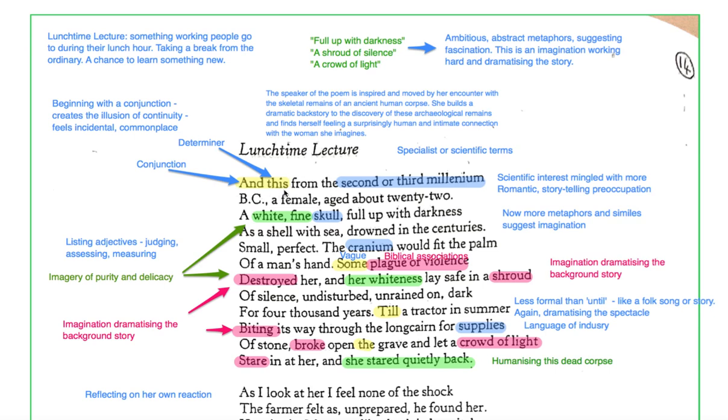Now, this is a determiner. Words like this, that, and these, those are determiners. They gesture towards a specific thing that they're pointing out. Now, this is just a poem. There's nothing there. There's just a poem on a table that you're reading. There is no female aged about 22 right in front of you.